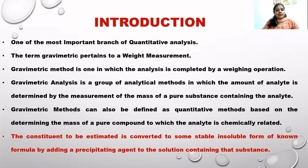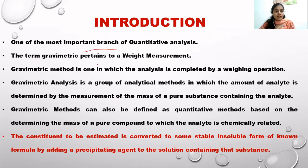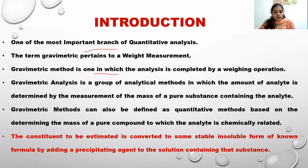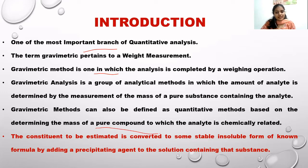For introduction, gravimetric analysis is one of the most important branches of quantitative analysis. The term 'gravimetric' means we are dealing with weights. It can be defined as a quantitative method based upon the determination of the mass of a pure compound to which the analyte is chemically related.